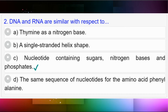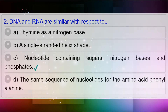Question number two: DNA and RNA are similar with respect to — option A: thymine as a nitrogen base; option B: a single-stranded helix shape; option C: nucleotide contains sugars, nitrogen bases, and phosphates; option D: the same sequence of nucleotides for the amino acid phenylalanine. Answer to question number two is option C: nucleotide contains sugars, nitrogen bases, and phosphates.